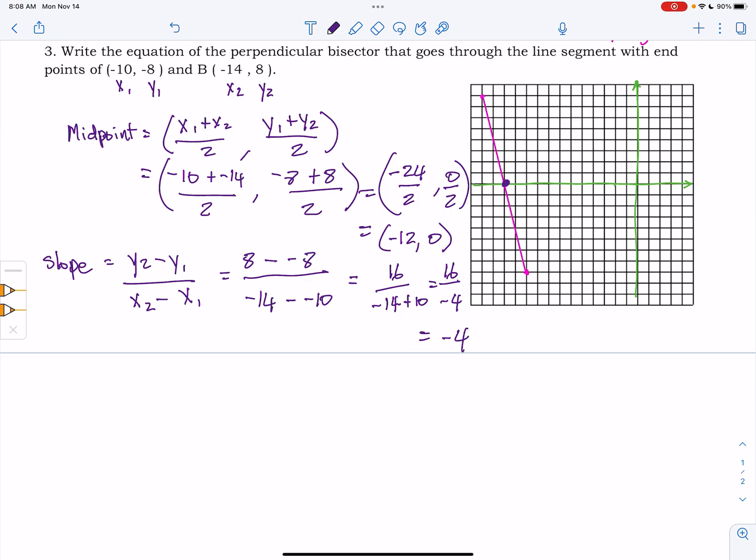Now, that is the slope of this line, which is helpful, but it's not the slope that we need. We need the perpendicular slope because we're looking for the line or the line segment that goes through this point perpendicularly.